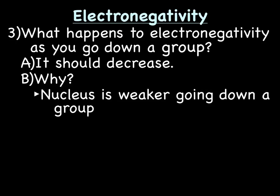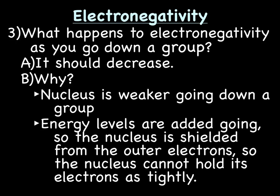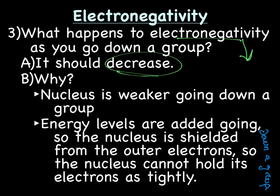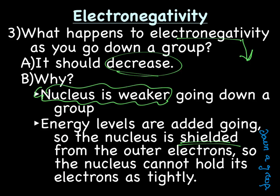Why does electronegativity decrease going down a group? The nucleus is weaker going down a group because energy levels are added going down a group. The nucleus is shielded from the outer electrons, so the nucleus cannot hold its electrons as tightly. Going down a group, electronegativity decreases because we have an effectively weaker nucleus, because we are adding shields or energy levels, blocking the nucleus from the outer valence electrons.